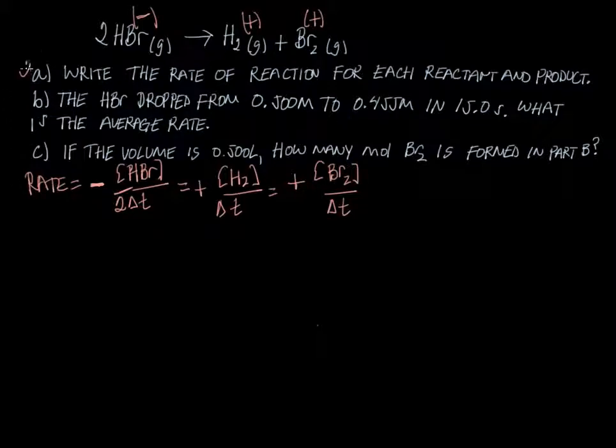Okay, so that's how you do part A. Now part B builds on that. It says the HBr concentration dropped from 0.500 molar to 0.455 molar in 15.0 seconds. What is the average rate? So we just use our equation here that we've created and plug in the values.